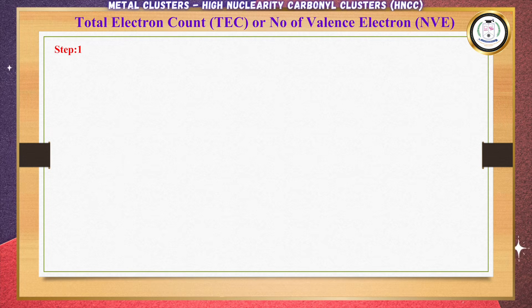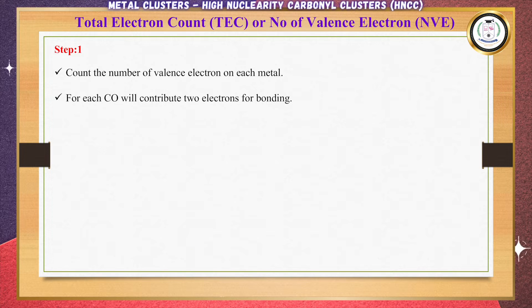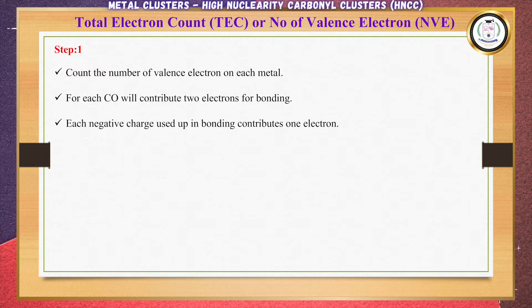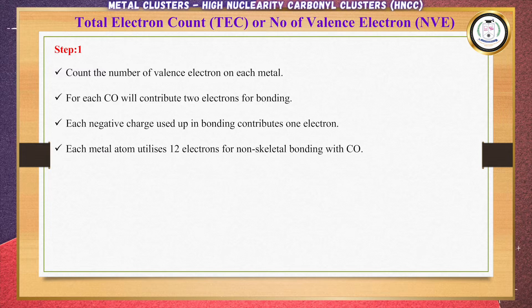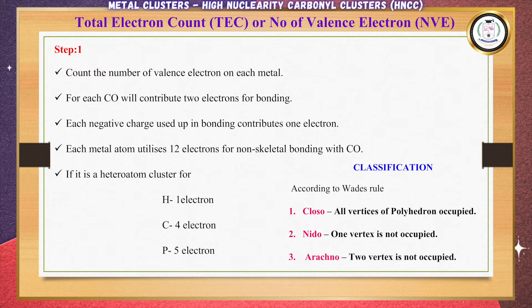Step one is the total electron count, or number of valence electrons. In step one, the first point is to count the number of valence electrons on each metal. Second, each CO will contribute two electrons for bonding, and each negative charge also contributes one electron. If it is a heteroatom cluster, hydrogen contributes one electron, carbon contributes four electrons, phosphorus contributes five electrons, and nitrogen contributes three electrons.